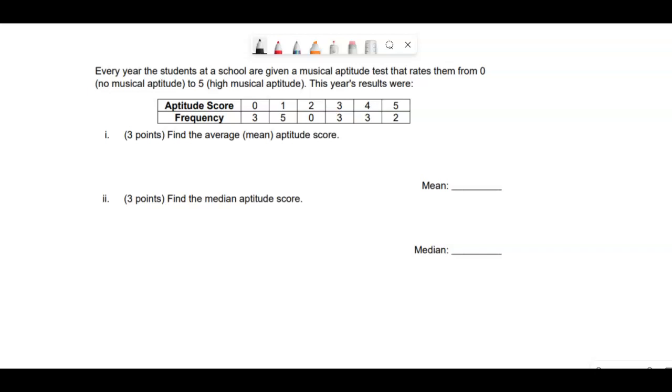Find the average or the mean aptitude score. So first off, the frequency table, this three tells us that there are three zeros. So if we were to list all these numbers down, not necessarily the way I would want to do this problem, but some students do it this way.